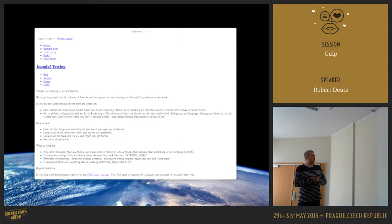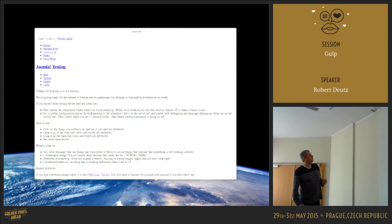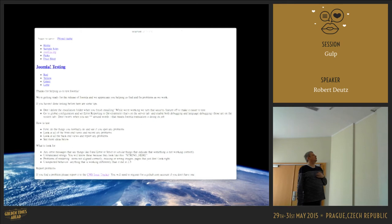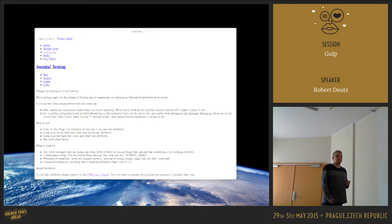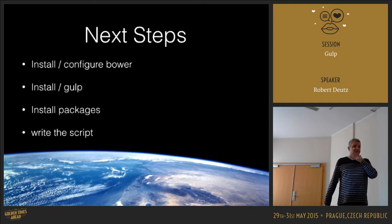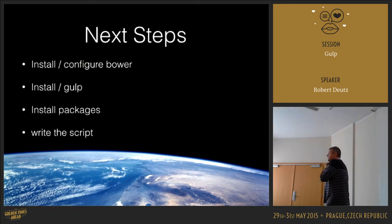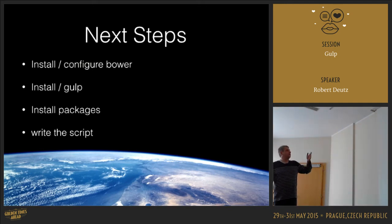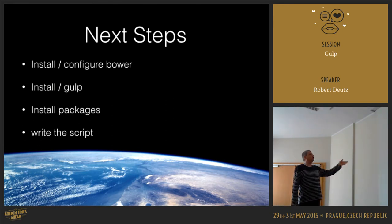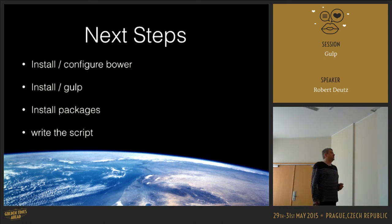That's the template when you view it in a browser window, and there's roughly no styling — that's just the content that comes out of Joomla. So what are our next steps? We install and configure Bower, we install Gulp, we install some packages, and we will write the script. Let's start.